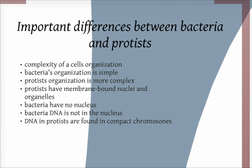In answer to the question — what are some important differences between bacteria and protists — the differences lie in the complexity of a cell's organization. A bacteria's cellular organization is simple, whereas a protist's cellular organization is complex. Protists are eukaryotes, which means they have membrane-bound nuclei as well as other membrane-bound organelles. Bacteria are prokaryotes, which means they have no nucleus. Another difference is that bacteria DNA is not contained within a nucleus, whereas in eukaryotes such as protists, DNA is found in compact chromosomes. These are some important differences between bacteria and protists.